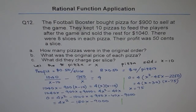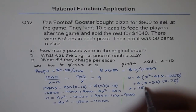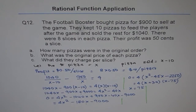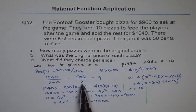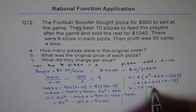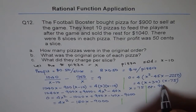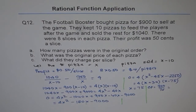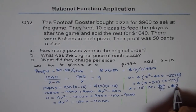What was the original price of each pizza? To find the original price of each pizza, the cost price equals $900 divided by 75, which equals $12. So each pizza originally cost $12.